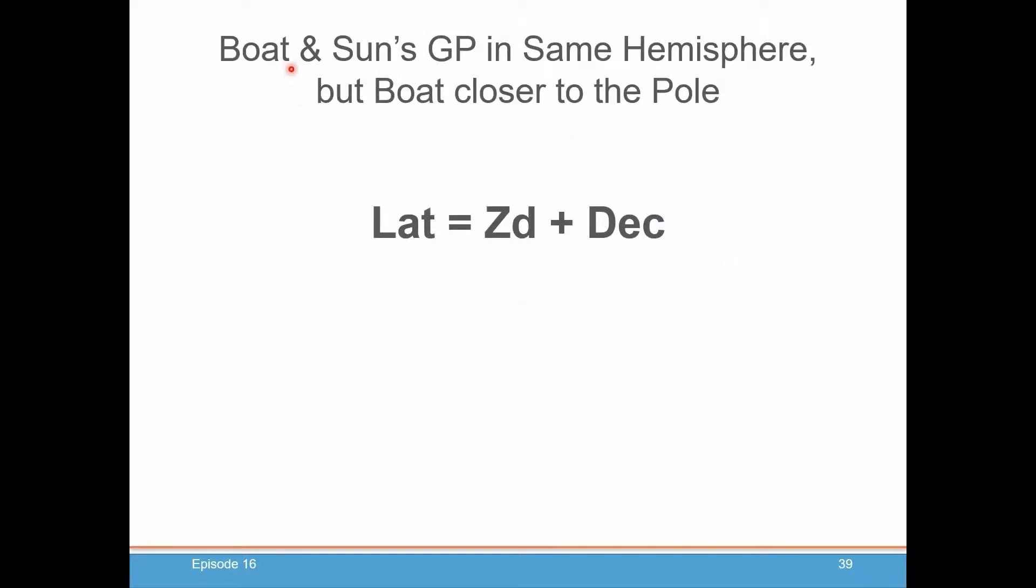So if the boat and the sun's GP are in the same hemisphere, so you're both north of the equator or you're both south of the equator, but the boat is closer to the pole than the sun is. So the boat is in what we'll call the temperate latitudes, above 23 degrees north or below 23 degrees south. Latitude is just simply the ZD plus the declination of the sun.